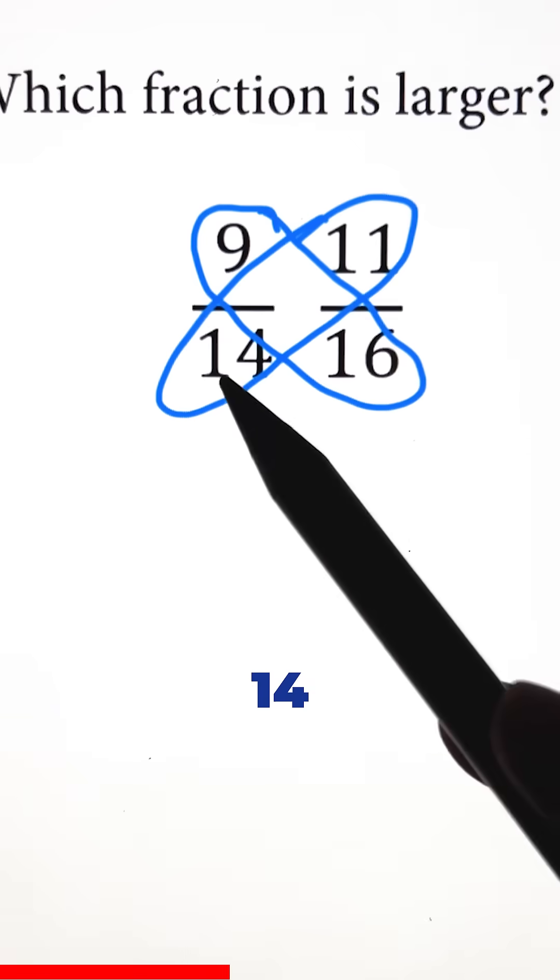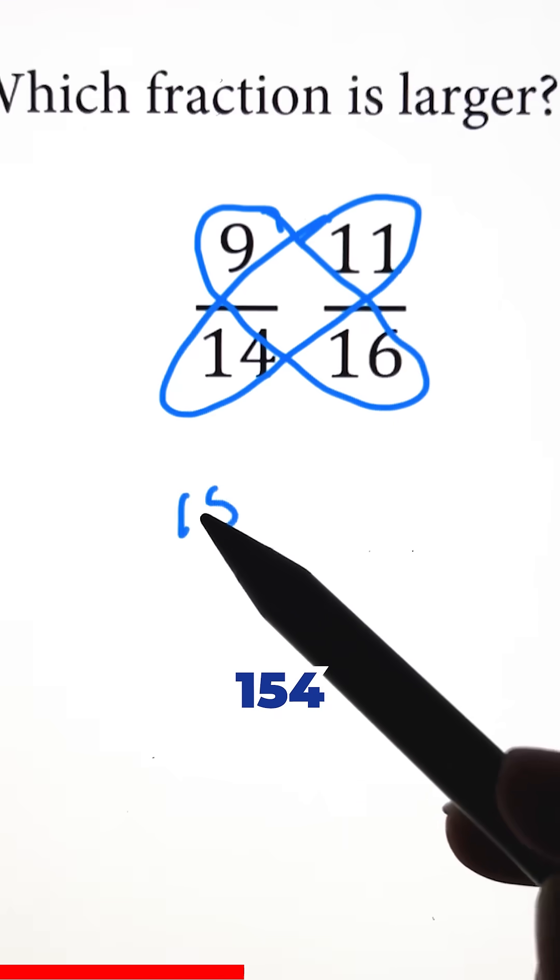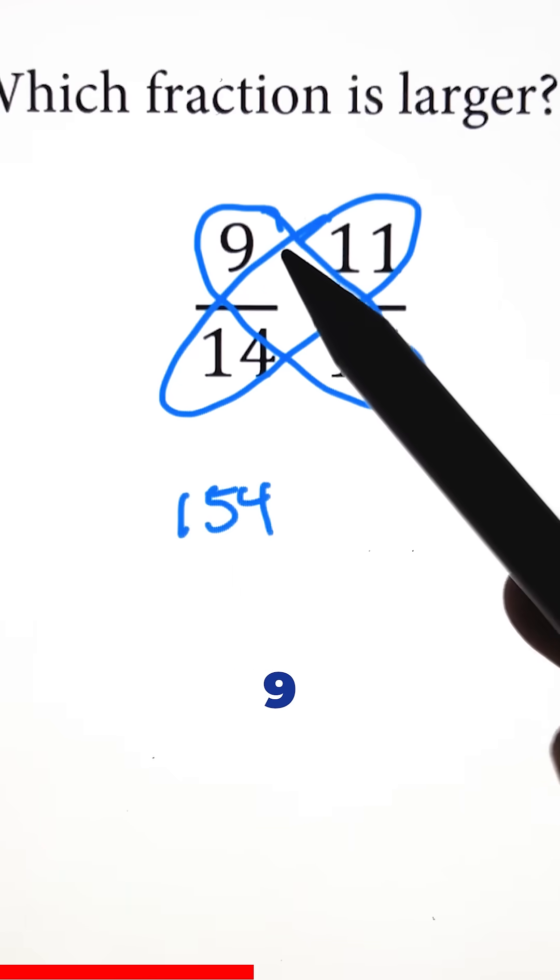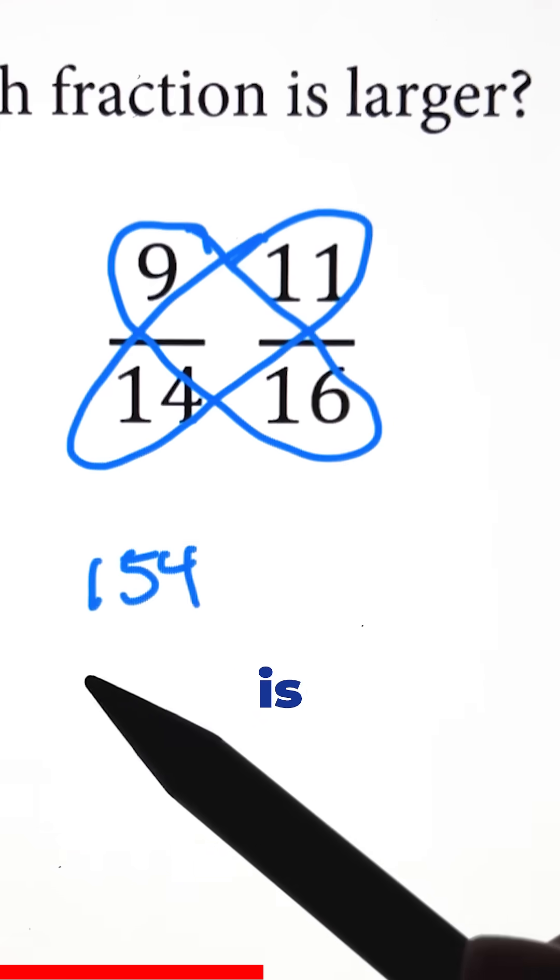When we multiply out 14 and 11, we get 154. And when we multiply out 9 and 16, the answer we get is 144.